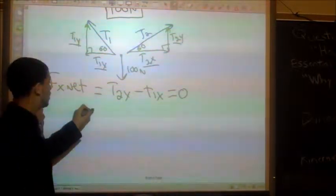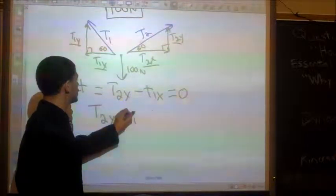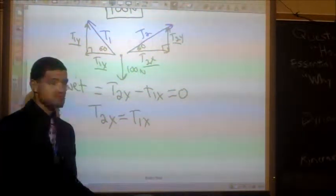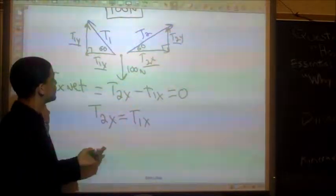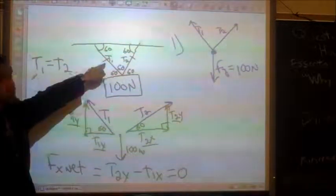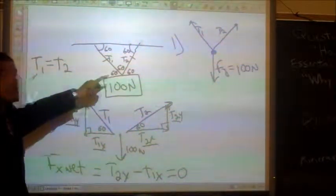And if we were to try to solve this out, this says that t2x equals t1 of x, which that sounds right because, as we said earlier, we know the sides are equal. If the sides are equal, it makes sense that their components have to be equal.